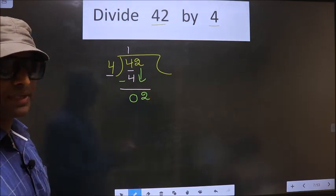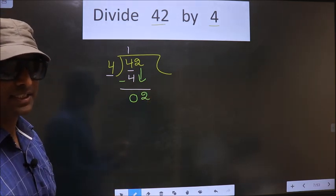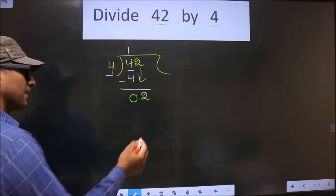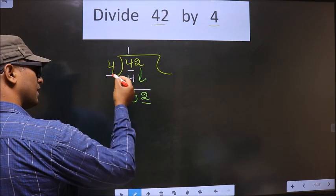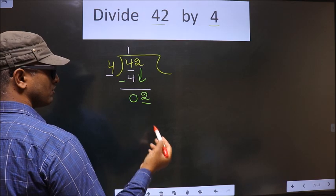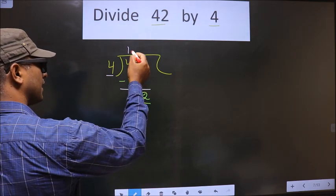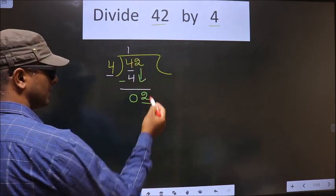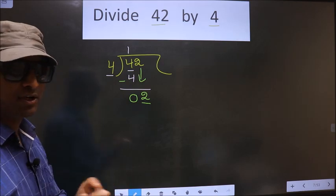Okay, this is where many do this mistake. What is that mistake? See, here 2 is smaller than 4. So what they do is they put the decimal here and take 0 here, which is wrong.